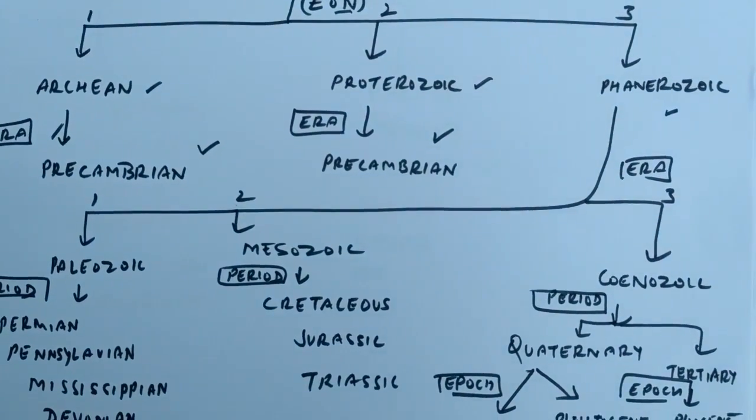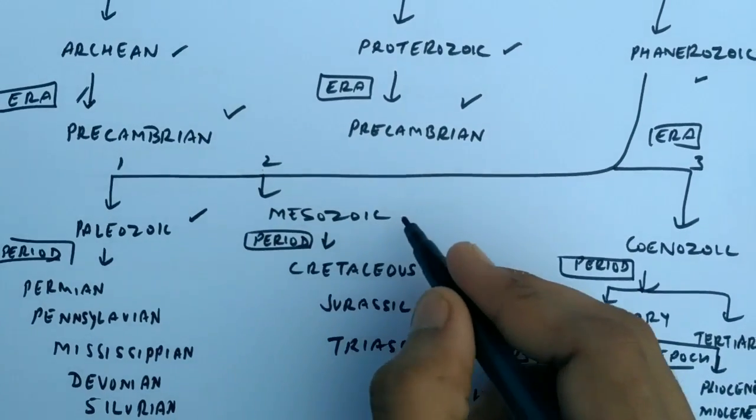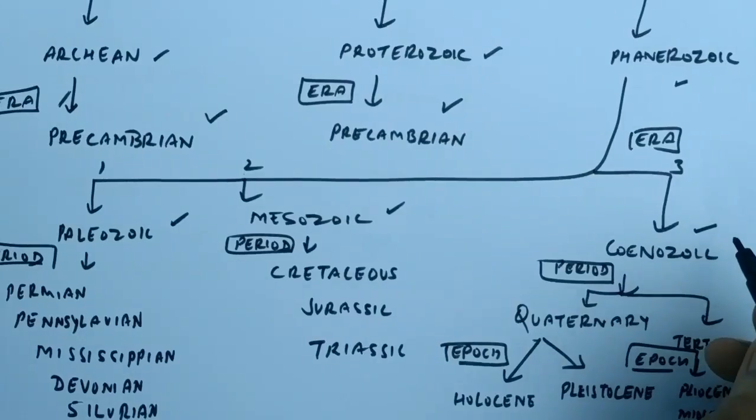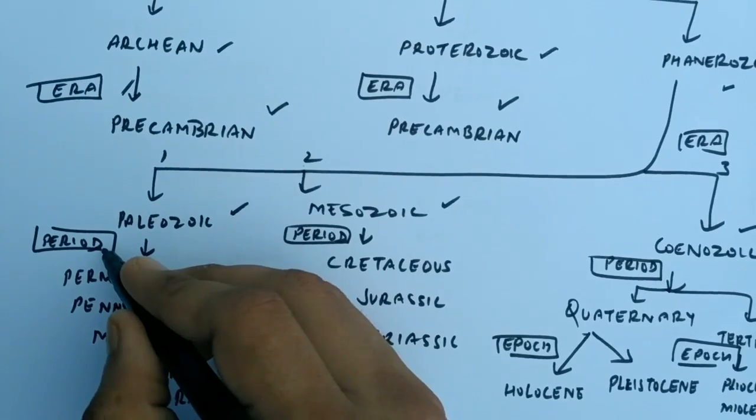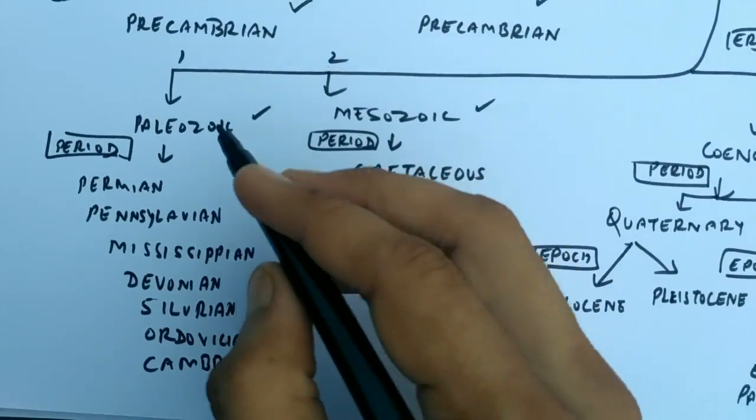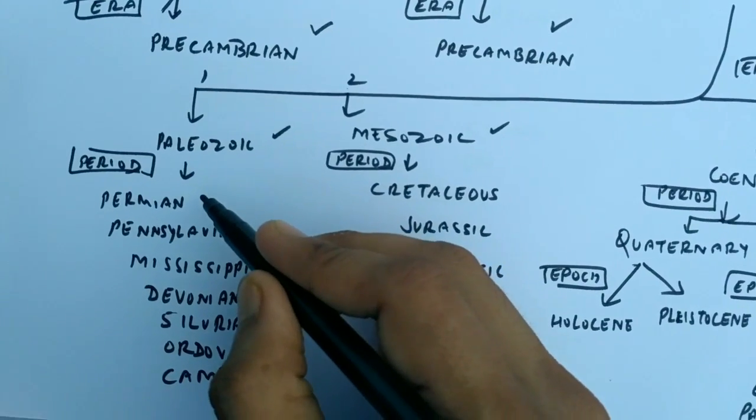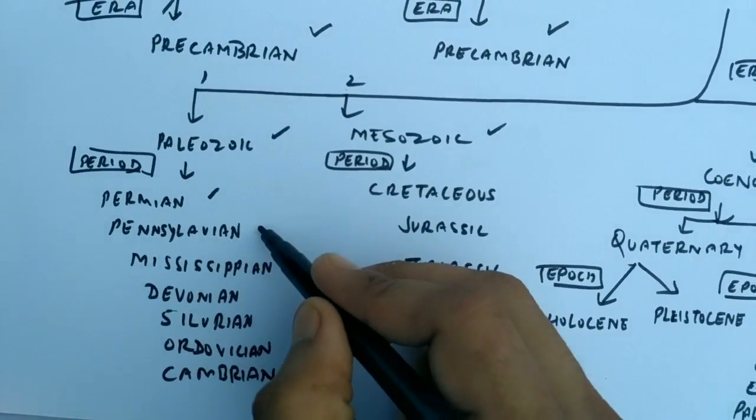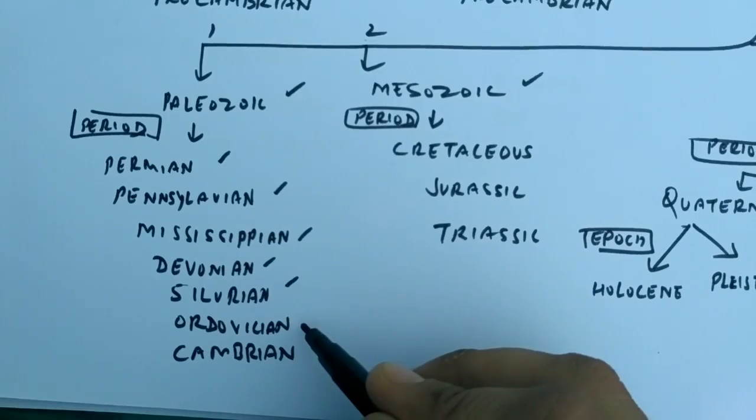The Phanerozoic has three eras: Paleozoic, Mesozoic, and Cenozoic. After the era, another unit of the lower level that comes is the period. In the Paleozoic era there are periods: Permian, Pennsylvanian, Mississippian, Devonian, Silurian or Ordovician, and Cambrian.